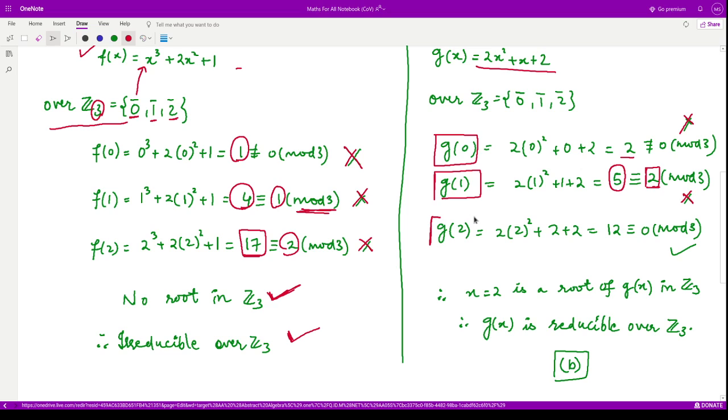Then you see g(2). Now, this comes out to be 12. When you divide 12 by 3, you will get the remainder as 0. So now, this 2 forms a root of this polynomial g(x) over Z₃. x = 2 is a root, and in this case, by the above result, we say that g(x) is reducible over Z₃.